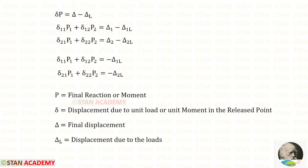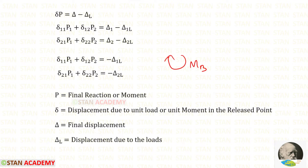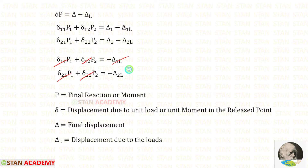Our first coordinate is the vertical reaction RB, so displacements delta 11, delta 21, and delta 1L will be deflections. Our second coordinate is the moment MB, so delta 12, delta 22, and delta 2L will be slopes. All of these displacements should be found at point B.